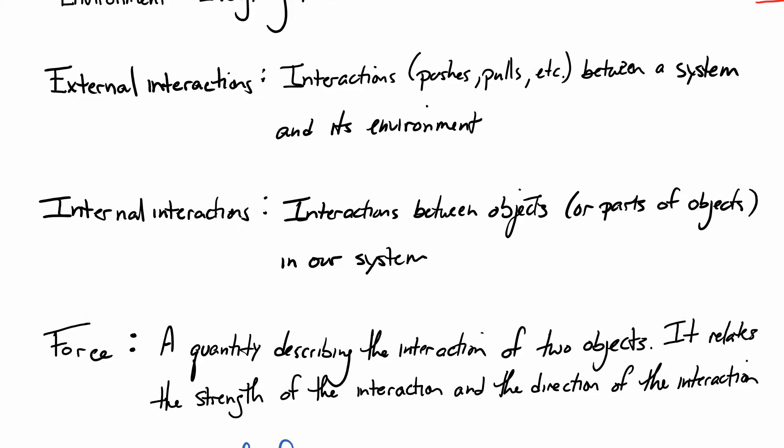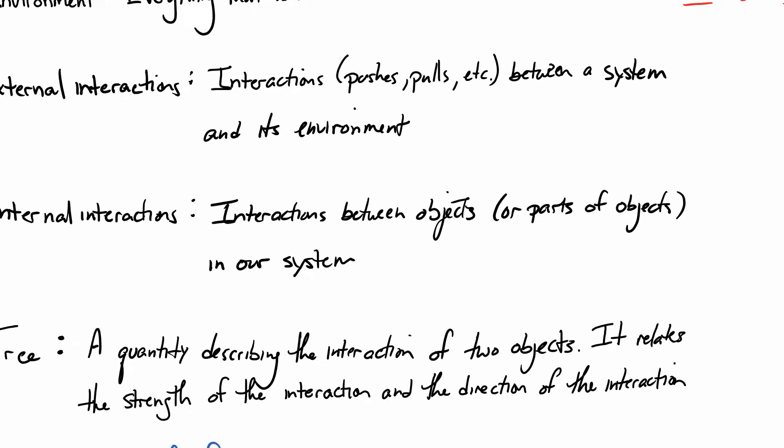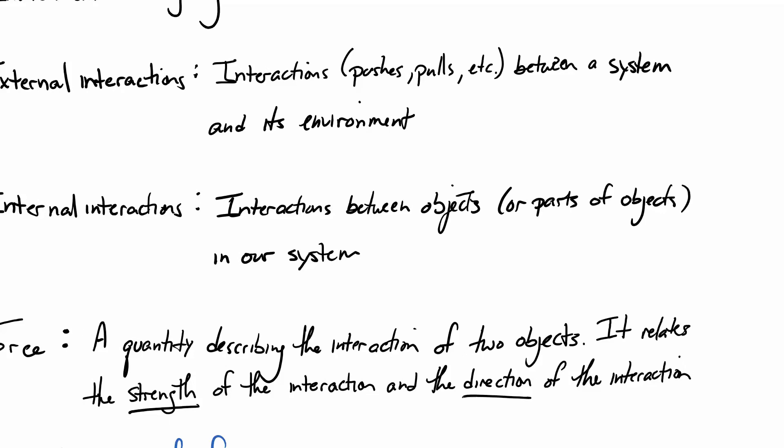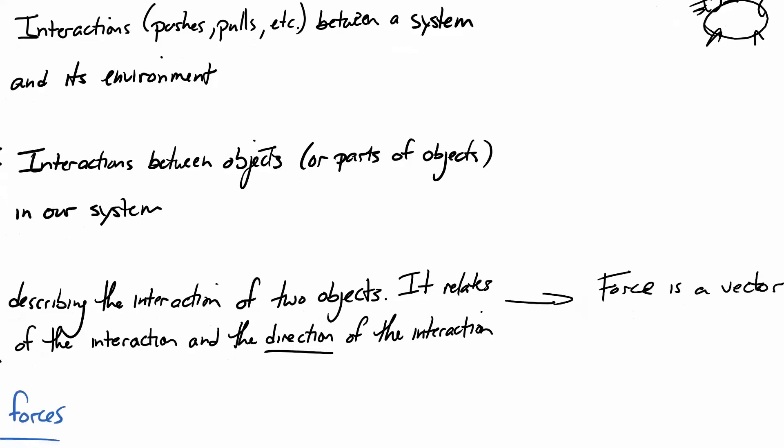And then the last kind of thing we want to talk about here is a force. And what is a force? Again, a force, not the force. Although, I love the force too. Let's be serious here. The force awoke. It's wonderful. Anyway. Continuing. So, a force is a quantity, some physical thing we can measure, describing the interaction of two objects. It relates the strength of the interaction and the direction of the interaction. And that, when we see strength and we see direction, that means force is a vector. It has magnitude and direction.